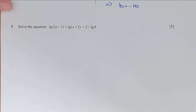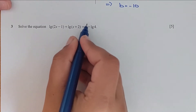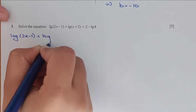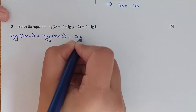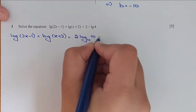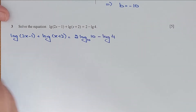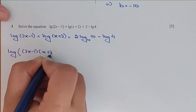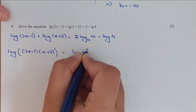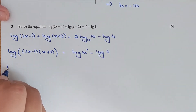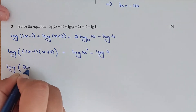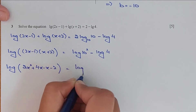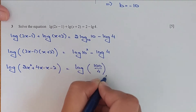Question number 3: solve the equation. All terms contain log base 10. We can write: log(2x minus 1) plus log(x plus 2) equals 2 times log base 10 of 10, which is 2 times 1, minus log 4. So we apply the product property of logarithms: log[(2x minus 1)(x plus 2)] equals log(100/4). So 100 by 4 equals 25.